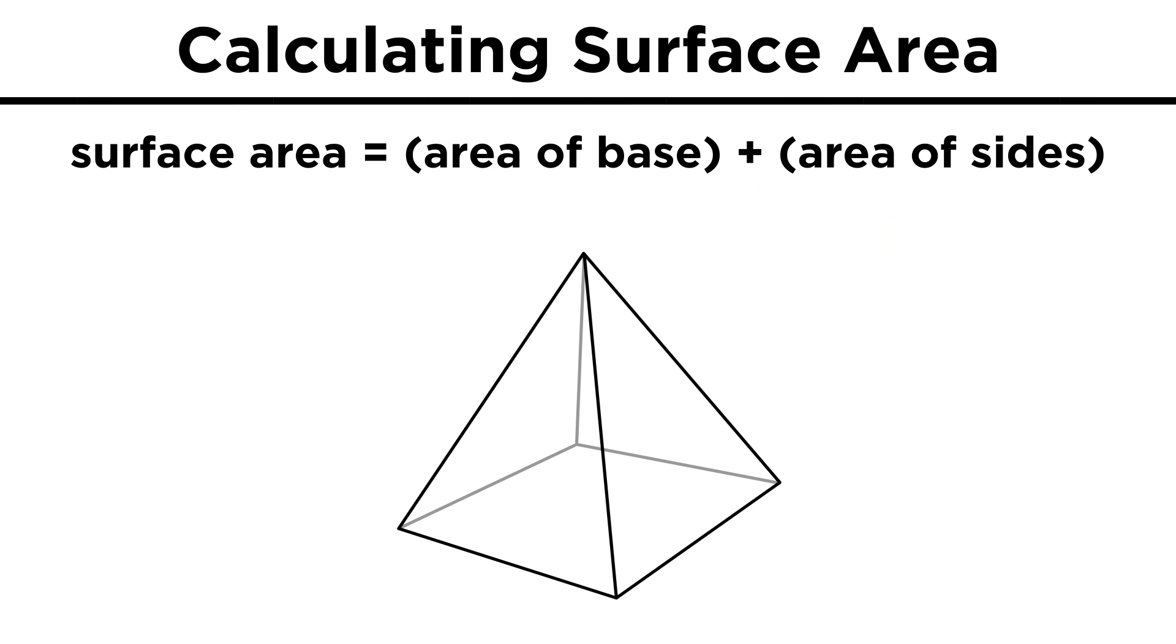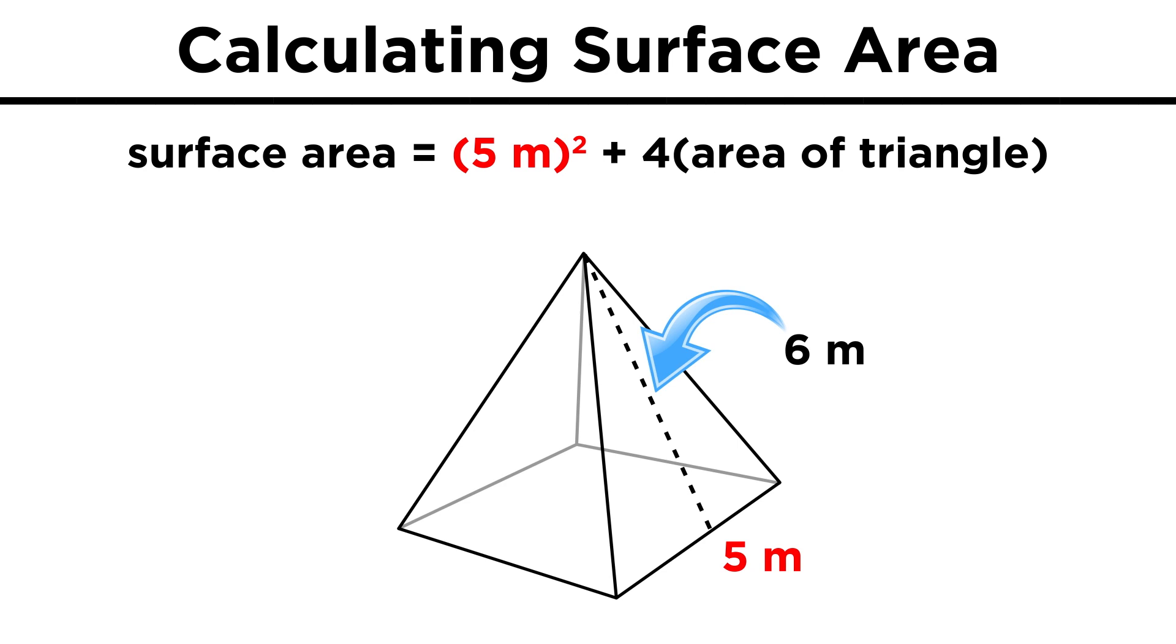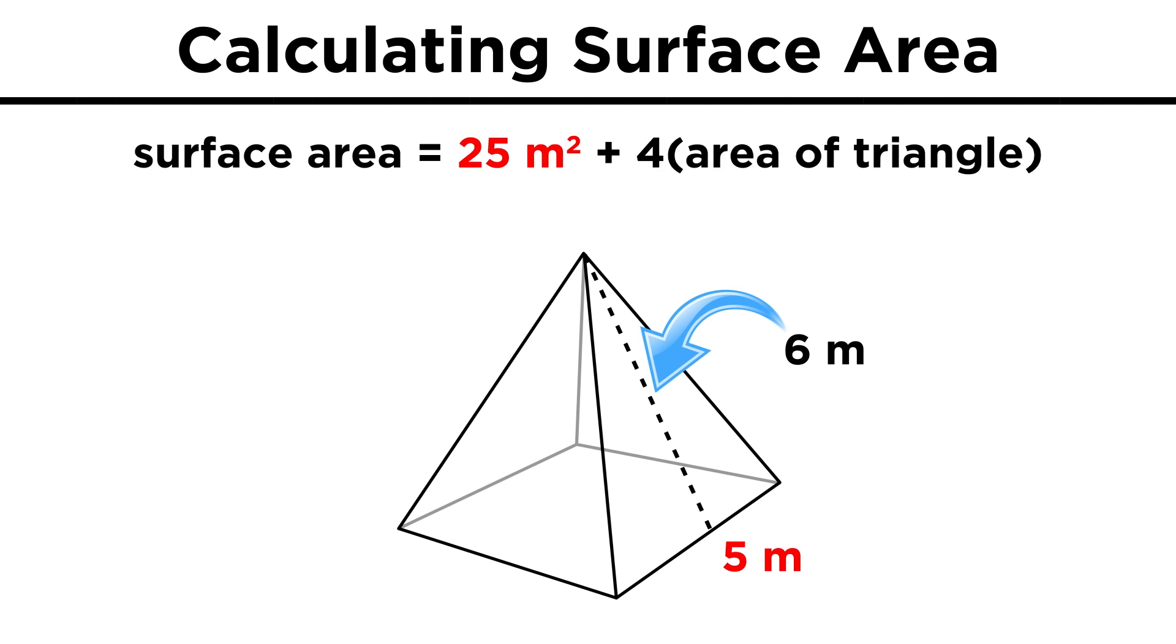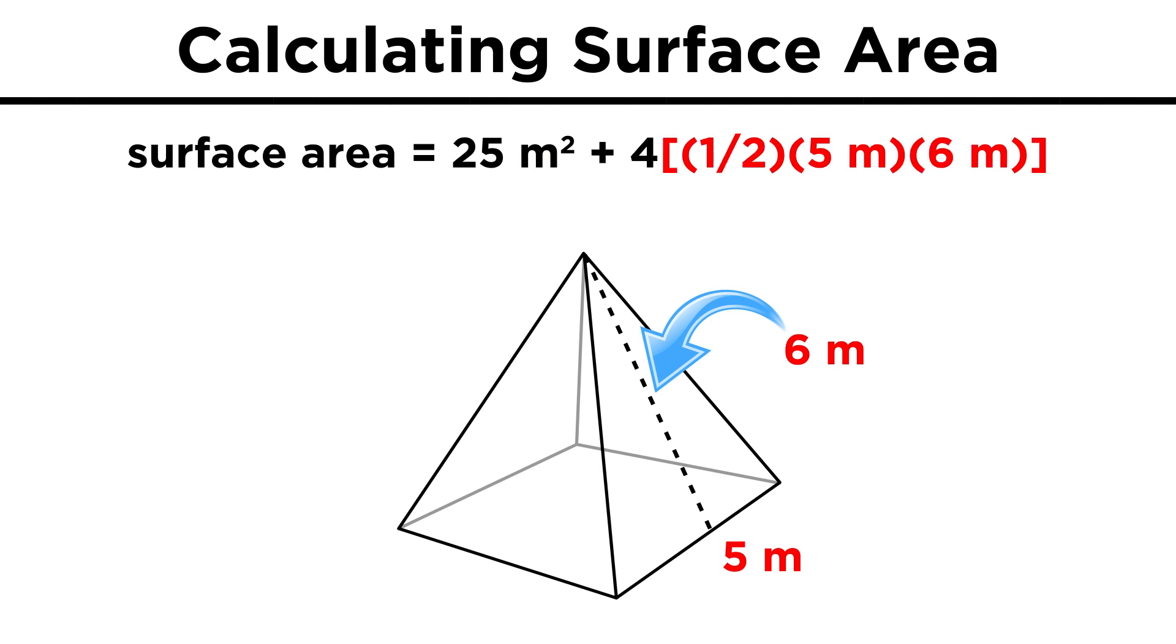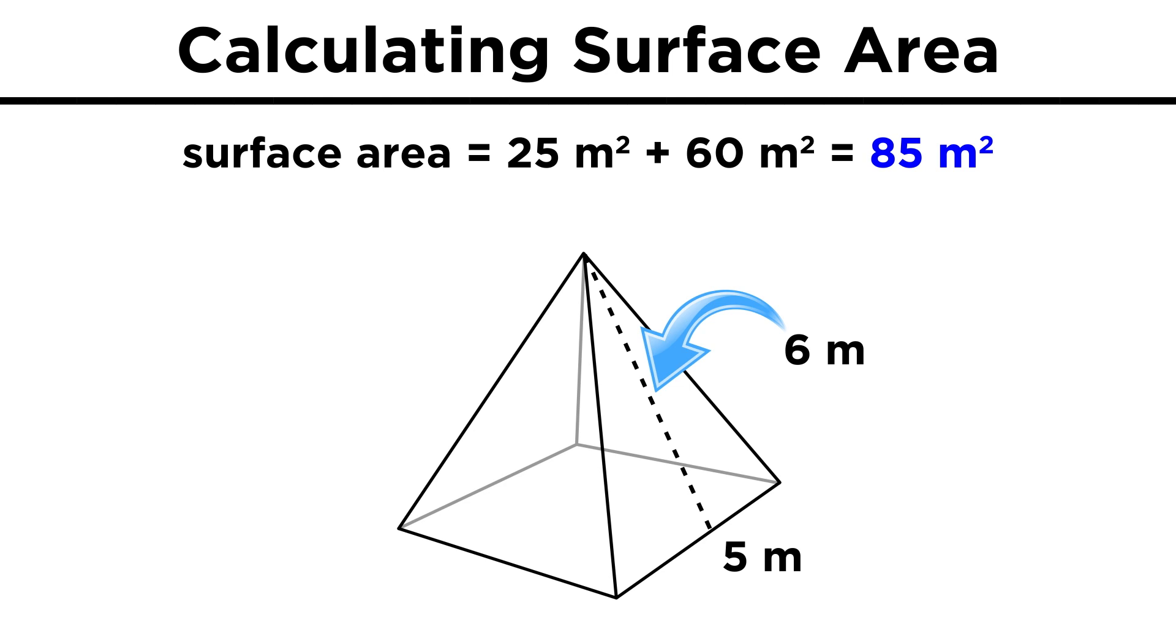What about for a pyramid, like this square pyramid? Now we have a couple different shapes. We have this square base, and then four triangles, so it's the formula for the area of a square, plus four times the area for a triangle. If we have a base with a side length of five meters, and triangles with bases that are just the side of the square, and with heights of six meters, then we can get the area of the square first, which is five squared, or twenty-five, and then each triangle will be one half five times six, or fifteen. There's four of them, so that's sixty. Twenty-five plus sixty is eighty-five square meters.